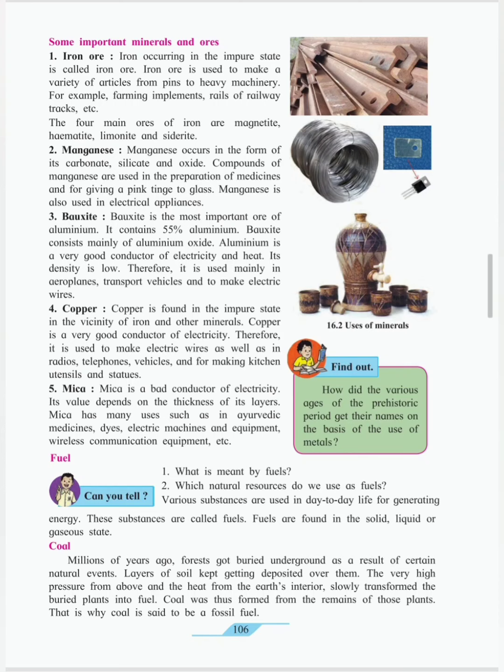Bauxite is the most important ore of aluminium. It contains 55% of aluminium. Bauxite consists mainly of aluminium oxide. Aluminium is a very good conductor of electricity and heat. Its density is low. Therefore, it is used mainly in aeroplanes, transport vehicles and to make electric cables.